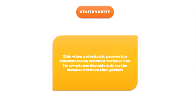Stationarity is a situation where a stochastic process or time series process has a constant mean, a constant variance, and the covariance depends on the distance between two time periods. In some books, you'll find terms like covariance stationarity or weak stationarity — they're just talking about the same thing. When you see weak stationarity or covariance stationarity, they're just referring to stationarity.